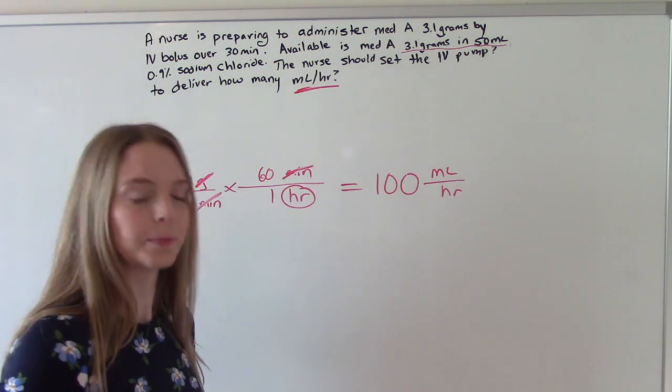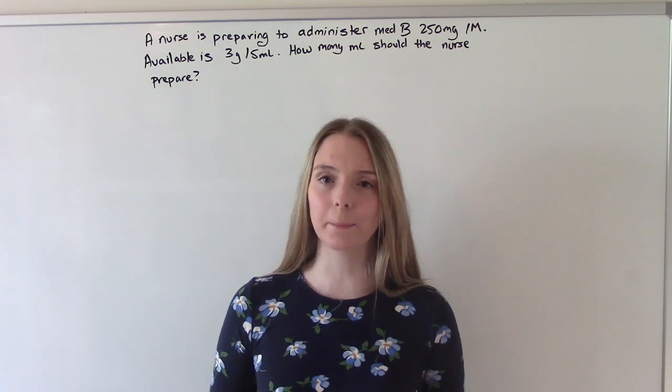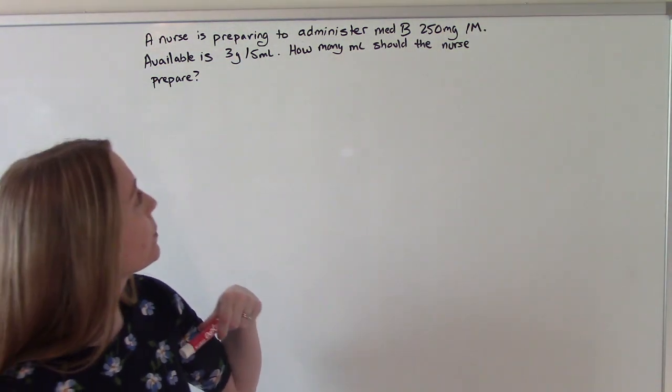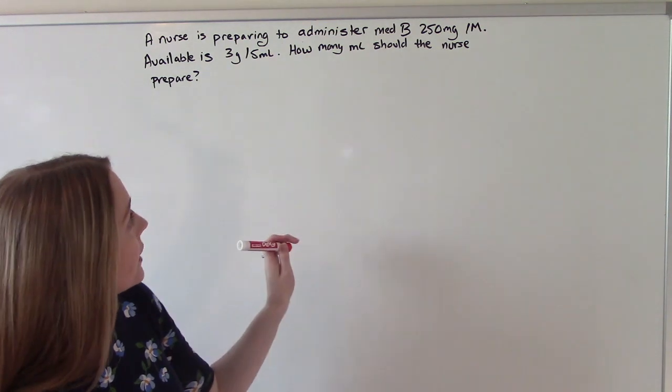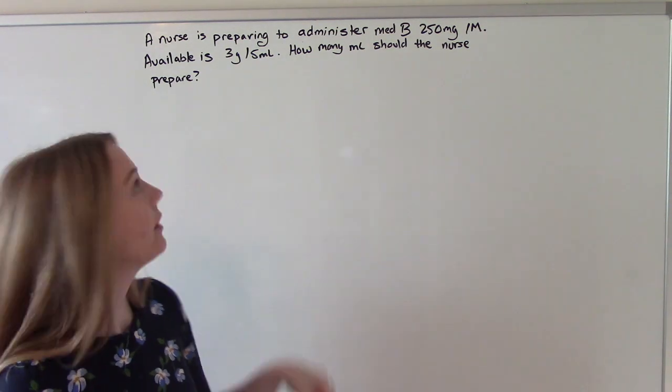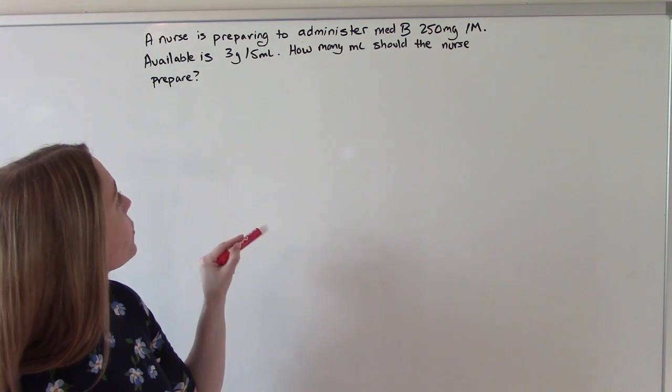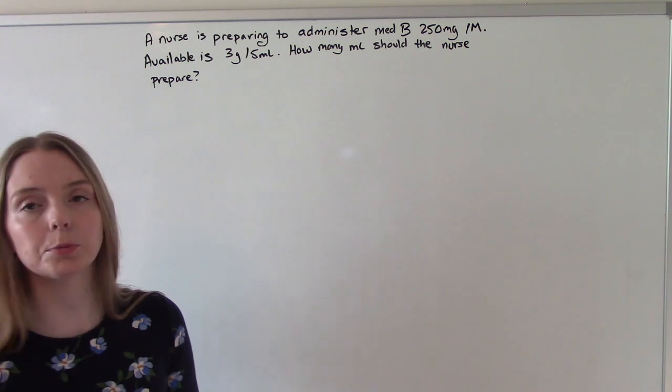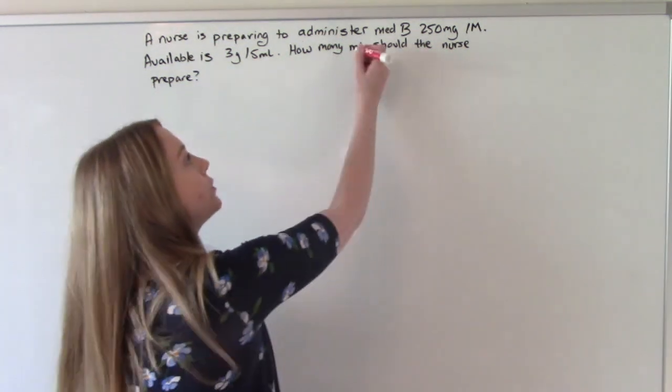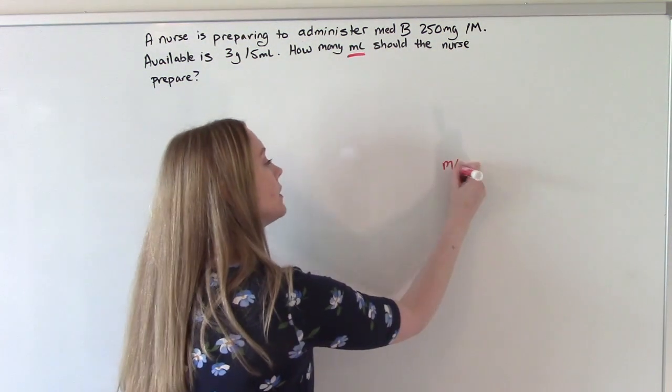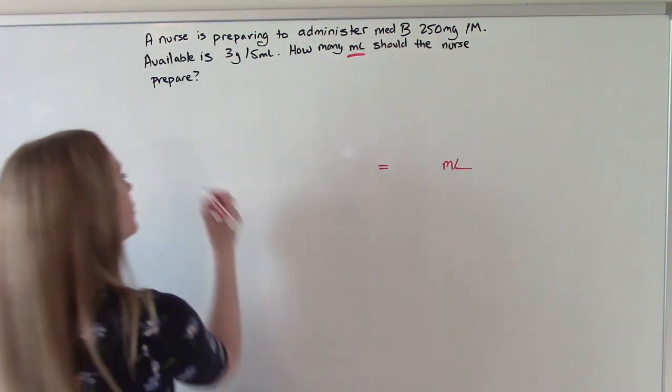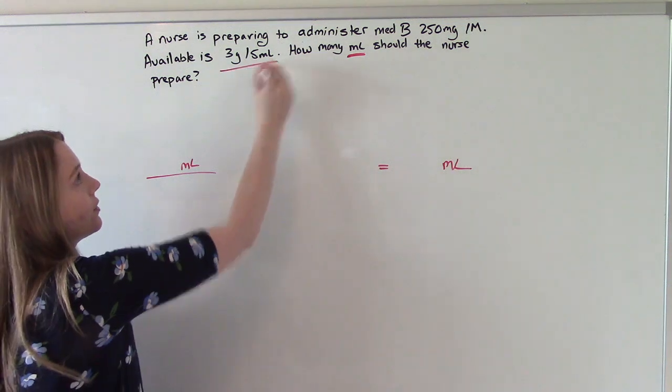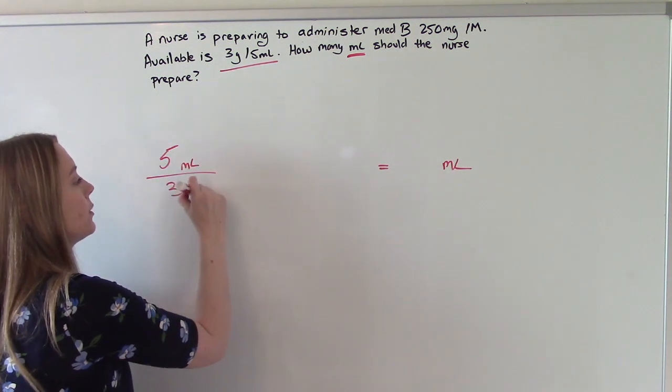Let's do just one more. This last one is going to be another mLs, and it's going to be via IM. So the nurse is preparing to administer medication B, 250 milligrams IM. Available is 3 grams per 5 mLs. How many mLs should the nurse prepare? So we want to do mLs. So that's our answer. So we need to have it in our numerator. And where do we see it? We see it right here. So 5 mLs, 3 grams.